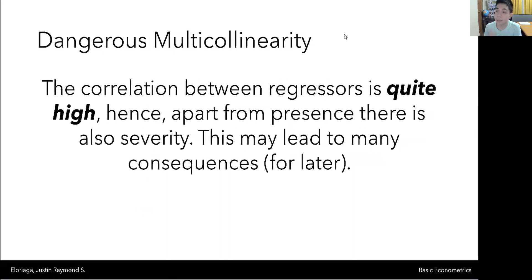On the other hand, dangerous multicollinearity is when the correlation between regressors is quite high, whether that's in a positive or in a negative direction. Hence, apart from it being there, the severity is also there. So the magnitude is there as well. And this may lead to many consequences, which we will discuss in another video.